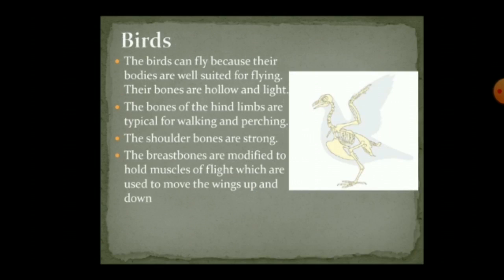Next are the birds. Birds have very light, hollow bones which help them to fly. The hind limbs — the backward limbs — help the bird to walk or perch, meaning to rest. When the bird wants to walk or rest, it uses its hind limbs, whereas the fore limbs are modified and used as wings. Their shoulders are very strong, and the muscles present near the shoulder bone and the breast bone are also very strong, helping the bird to move its wings up and down.